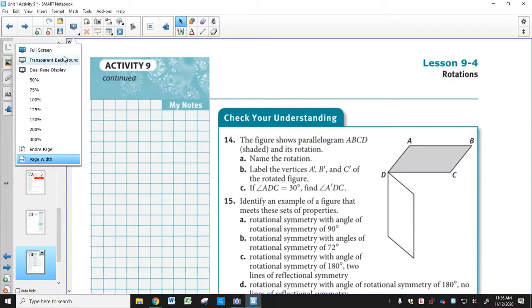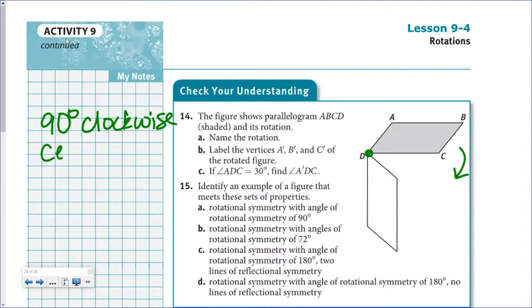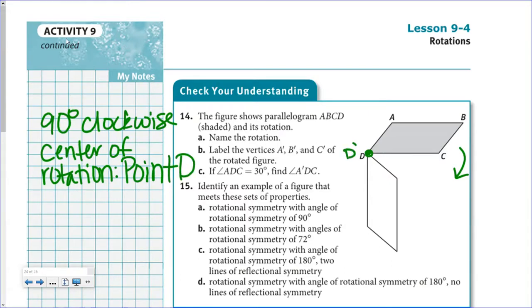For the check your understanding, pause the video to try them, then check your answers. When it says name the rotation: the parallelogram went clockwise, so it's a 90-degree clockwise rotation. The center of rotation — point D did not move, so the center of rotation is point D. D' stays where it started, A comes to right here as A', then B' and C'.